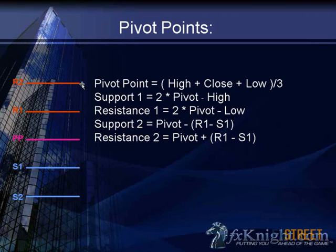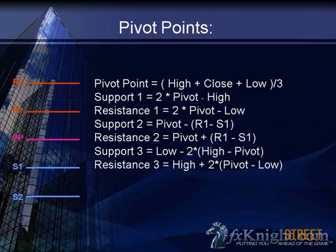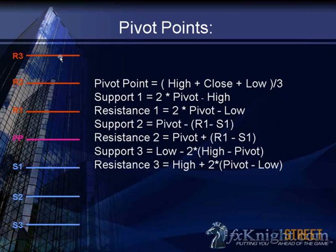Above R2 and below S2 we have one other set: support 3 and resistance 3. You subtract the pivot from the highs, multiply by 2, subtract that from your lows — going under — and you get S3. Subtract the lows from the pivot point, multiply by 2, add that above your highs, and you get R3.